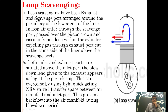First let's begin with loop scavenging. In loop scavenging, both exhaust and scavenge ports are arranged around the periphery at the lower end of the liner. Air enters through the scavenge port, passes over the piston crown, and rises forming a loop within the cylinder, expelling gas through the exhaust port cut in the same side of the liner above the scavenge port.